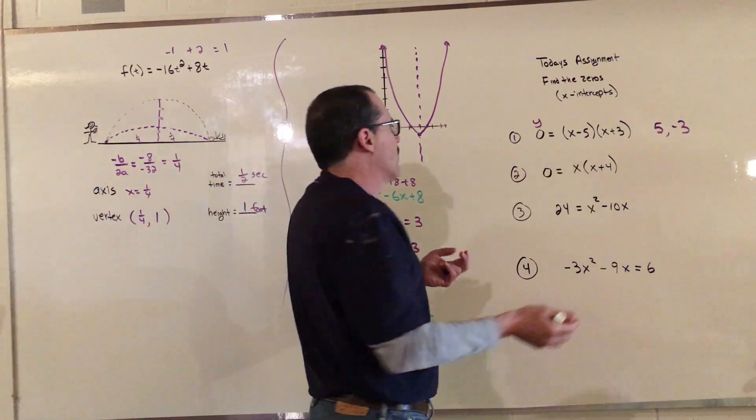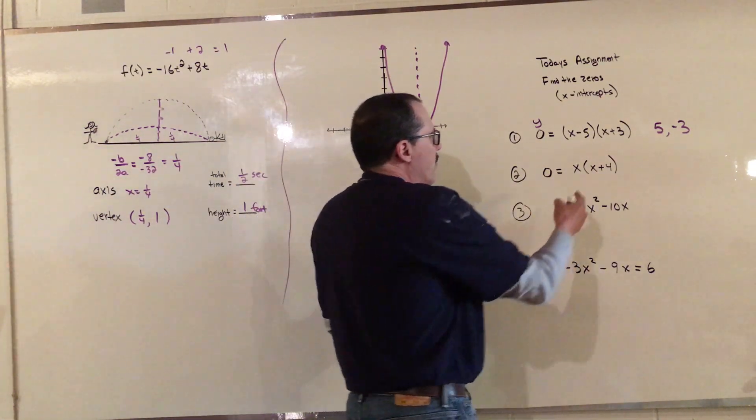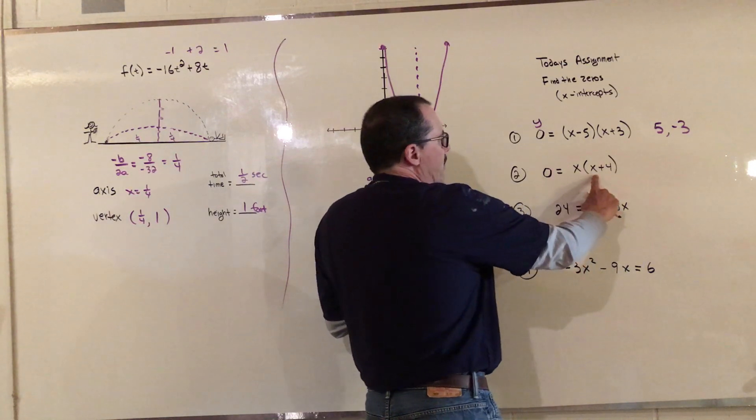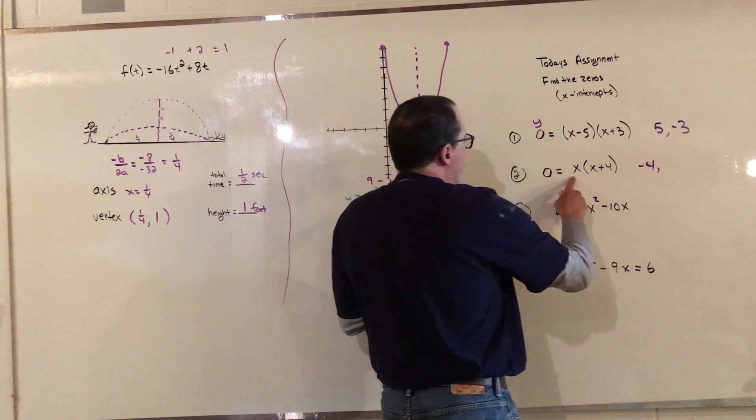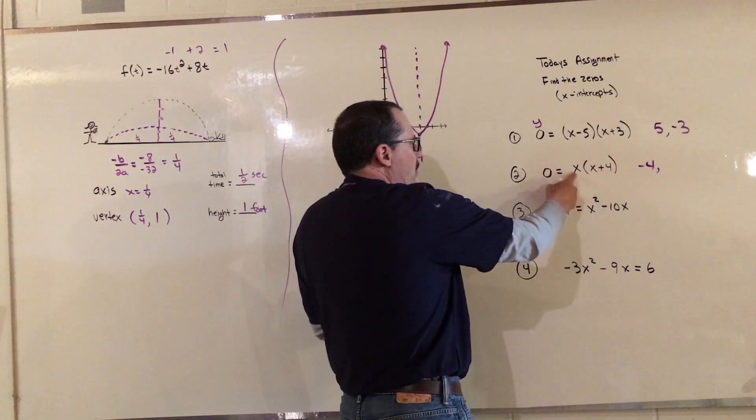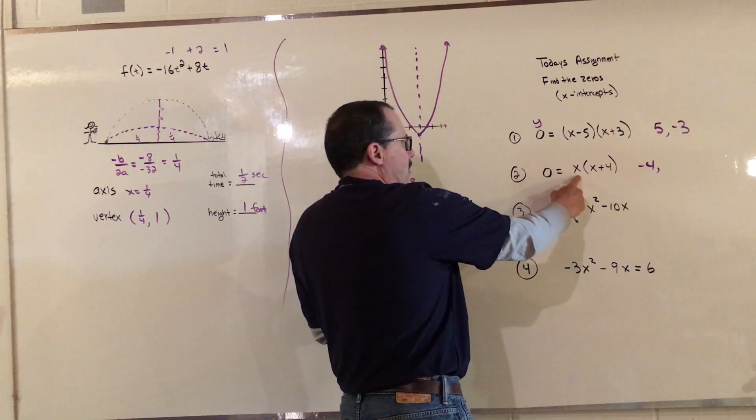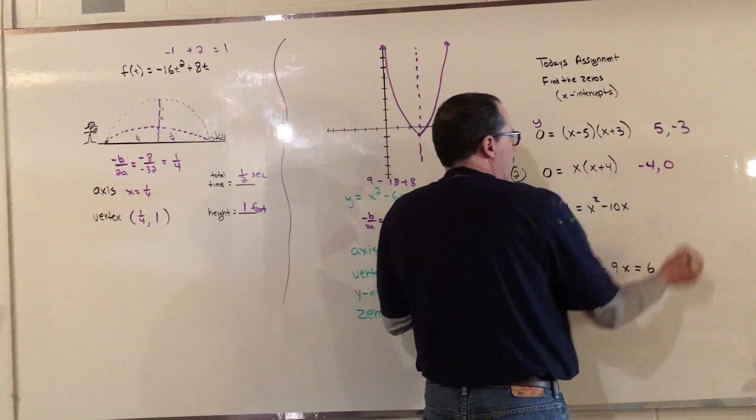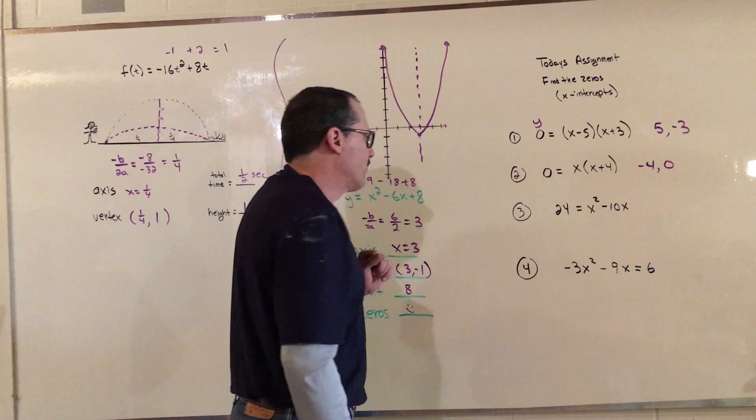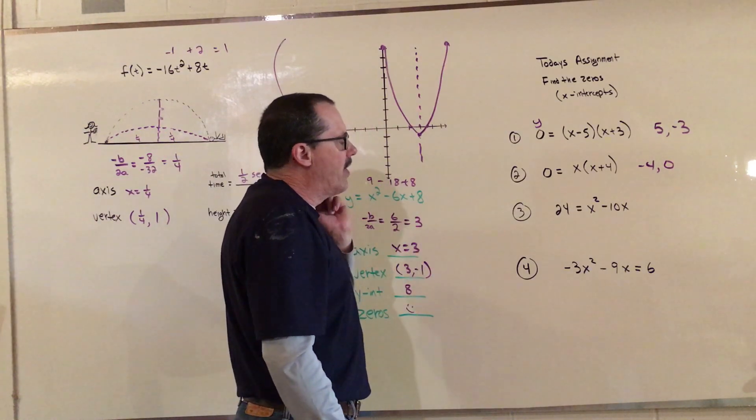Now we look at this one. We say what's the x-intercepts? Well, for inside the parentheses this would have to be negative 4. Then we have to think about this one. This doesn't have a number next to it, but what would make it 0 is 0, because 0 times anything is going to give you 0. And so there's your two: negative 4 and 0.